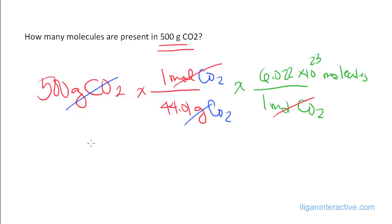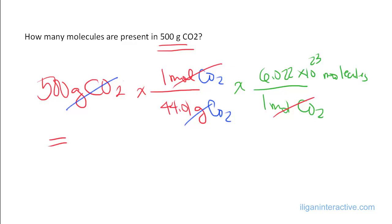Which will, if we do the math, 500 divided by 44.01 times 6.022 exponent 23.